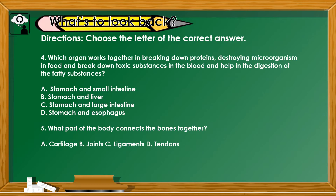Number 4: Which organ works together in breaking down proteins, destroying microorganisms in food, breaking down toxic substances in the blood, and helping in the digestion of fatty substances? A. Stomach and small intestine, B. Stomach and liver, C. Stomach and large intestine, D. Stomach and esophagus. The correct answer is Letter B. Number 5: What part of the body connects the bones? A. Cartilage, B. Joints, C. Ligaments, D. Tendons. The correct answer is Letter C.